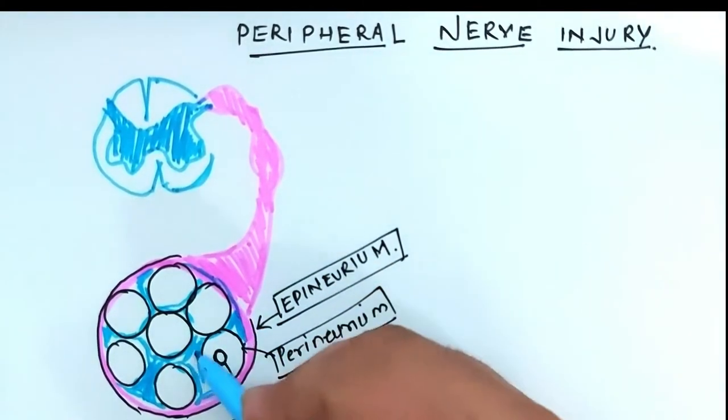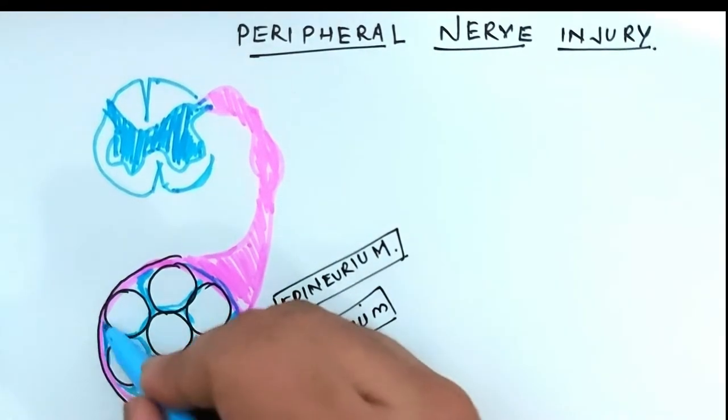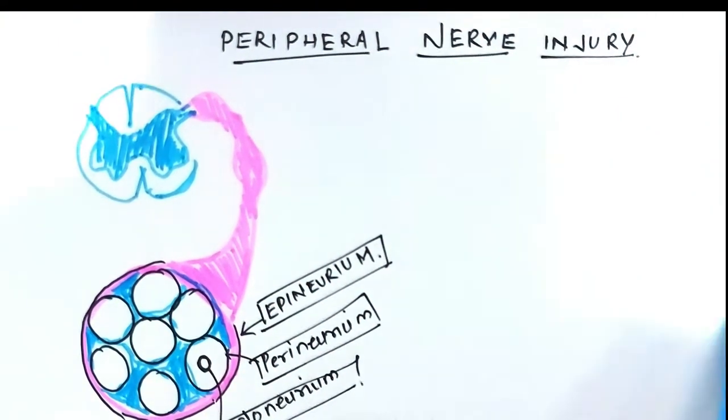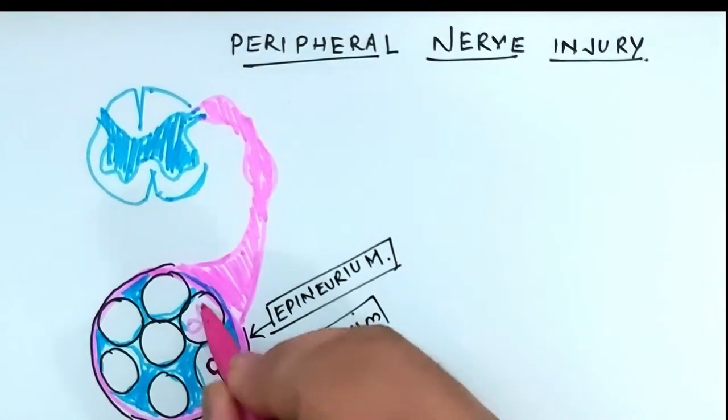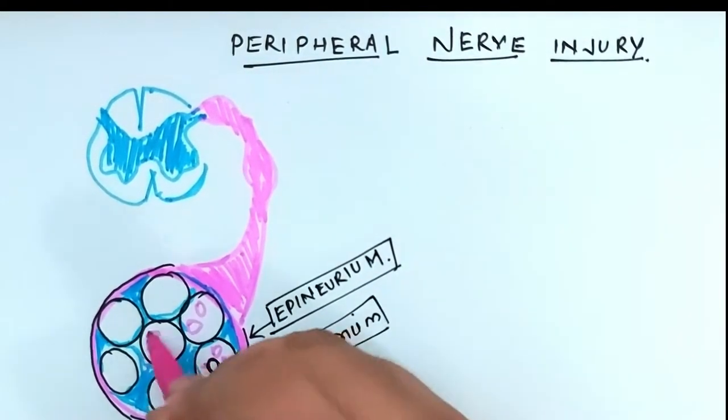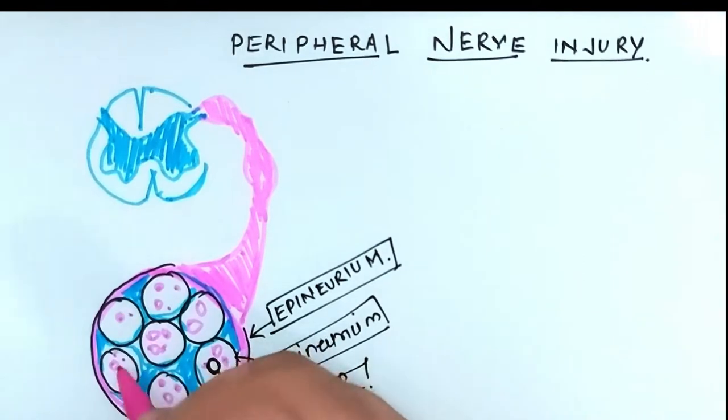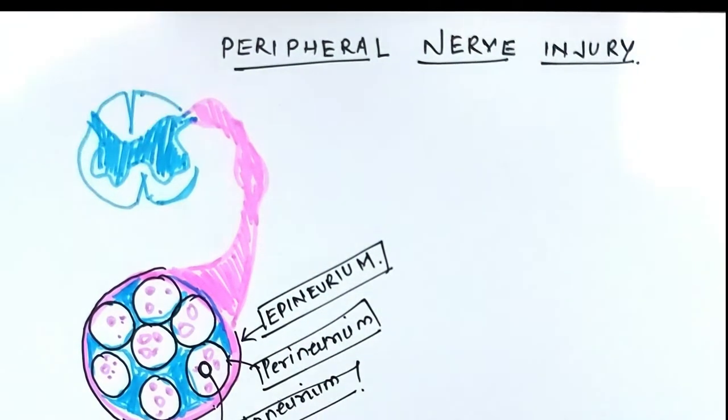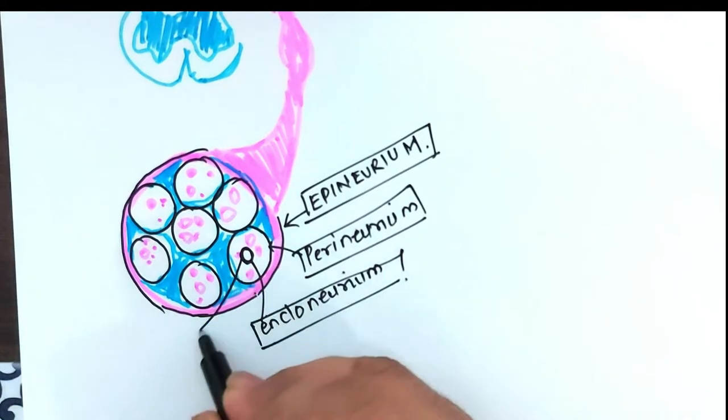Now within the fasciculi and the spinal nerves is the collagenous matrix which is called the fascia. This fascia helps to compartmentalize the system and also allows for the smooth gliding and sliding of the nerve fibers.